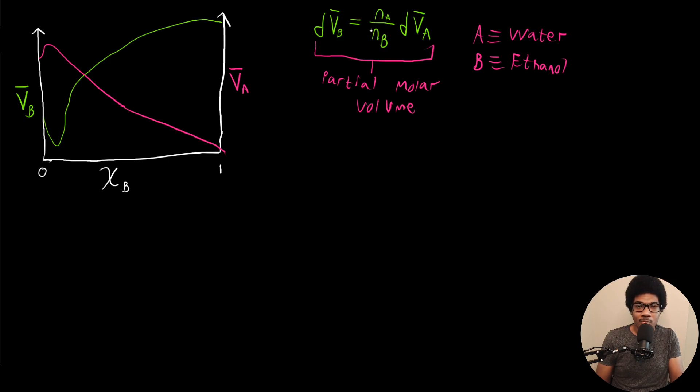So the Gibbs-Duhem relationship, even though it's very general for any multi-component system, is going to be very important when we look at binary mixtures. We can derive this relationship for any of our partial molar quantities based on the Gibbs-Duhem expression.